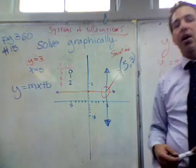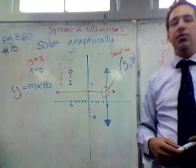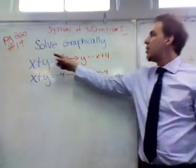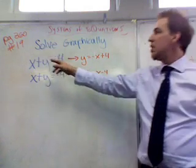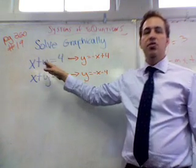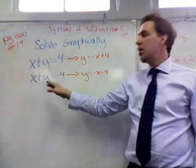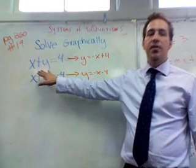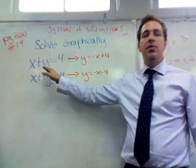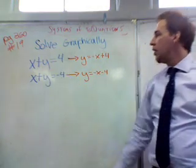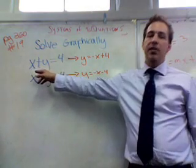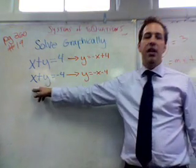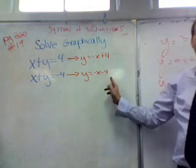We're going to proceed now to number 19, which is a very unique problem. Number 19 on page 360. We're going to solve this graphically. There are two equations. X plus Y equals 4, and X plus Y equals negative 4. And the first thing we have to do when we're solving graphically is convert to Y equals MX plus B. And the way we do that in this case is subtract X on both sides. We get Y equals negative X plus 4. And on this one, when we subtract X, we get Y equals minus X minus 4.